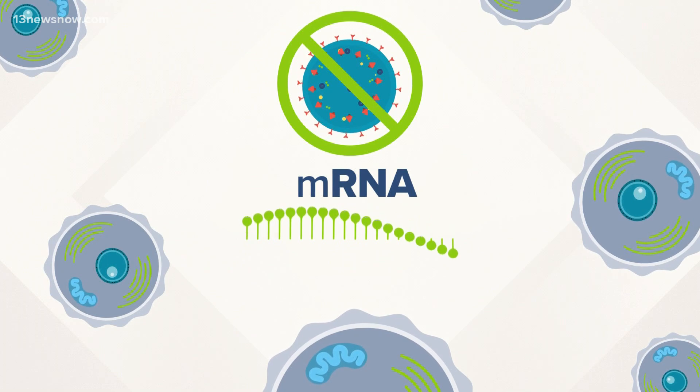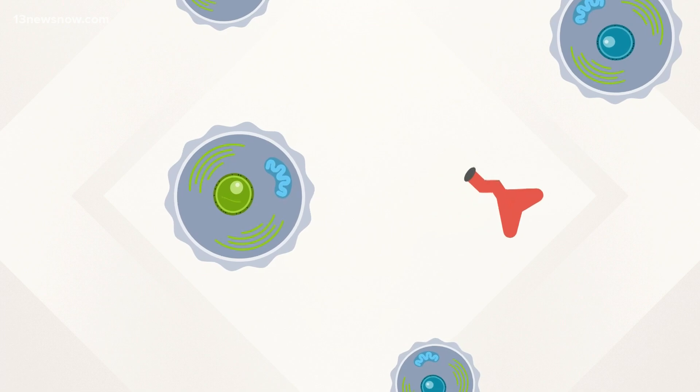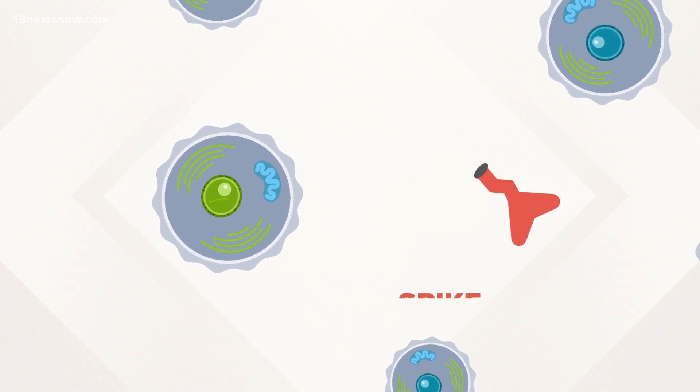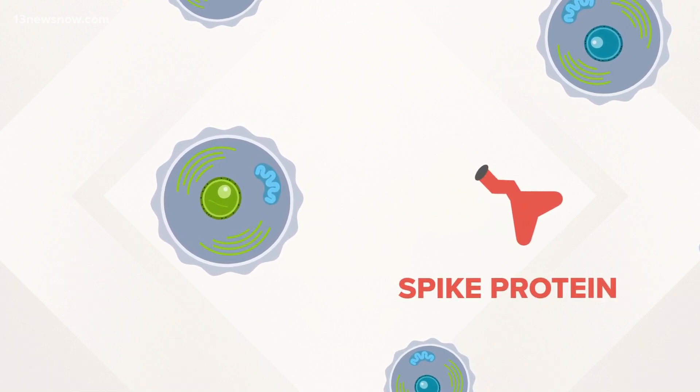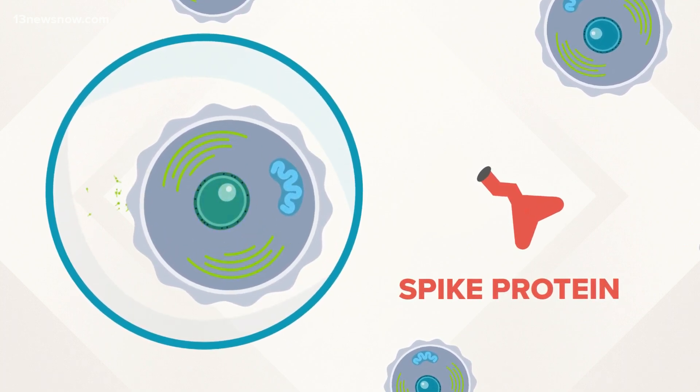But how? mRNA vaccines teach some of our cells how to make one part of the virus, not the entire germ. In this case, it's that spike protein that you've seen in pictures. Once the protein is made, the cell breaks down the mRNA and gets rid of it.